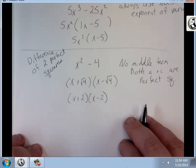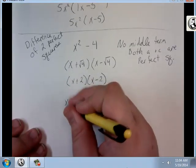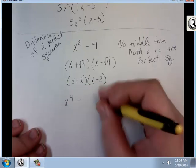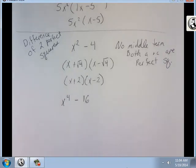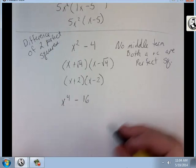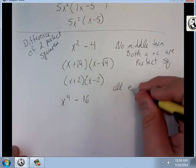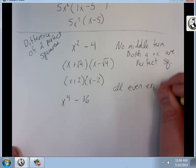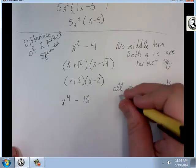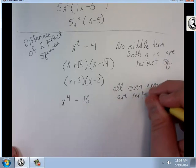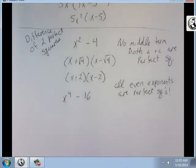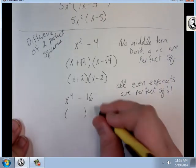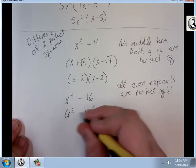Now, how about something like this? All even exponents are perfect squares. So if I factor this one, I'd have x squared plus 4, x squared minus 4.